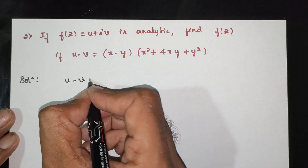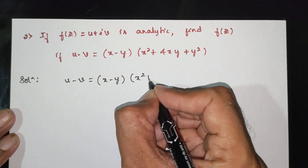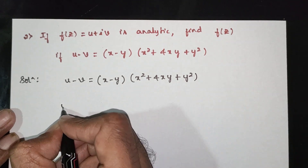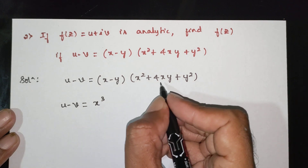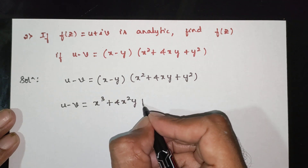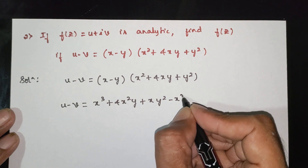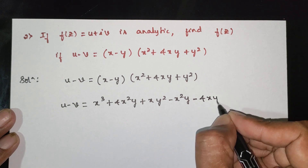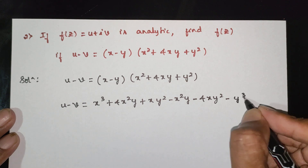u minus v is equal to (x minus y)(x squared plus 4xy plus y squared). Expanding: x into x squared gives x cubed, x into 4xy gives 4x squared y, x into y squared gives xy squared. Minus y into x squared gives minus x squared y, minus y into 4xy gives minus 4xy squared, minus y into y squared gives minus y cubed.